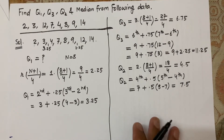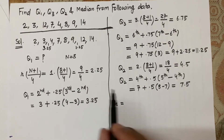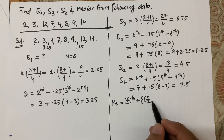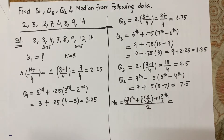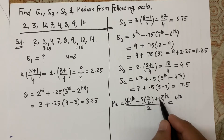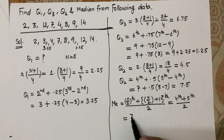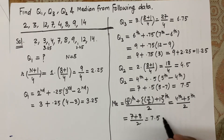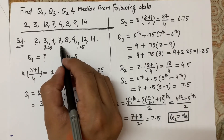Now let's verify with the median. Since the number of items is even, median = (n/2 th item + n/2+1 th item) / 2. With n = 8: (4th item + 5th item) / 2 = (7 + 8) / 2 = 7.5. This verifies that Q2 is always equal to the median.